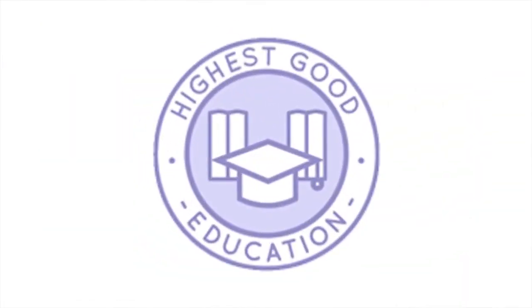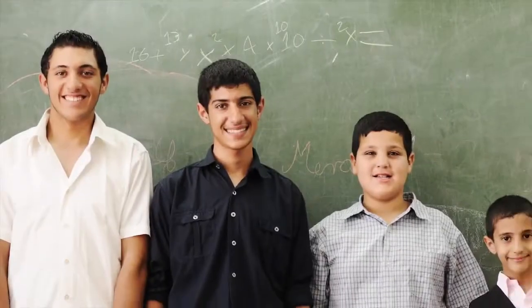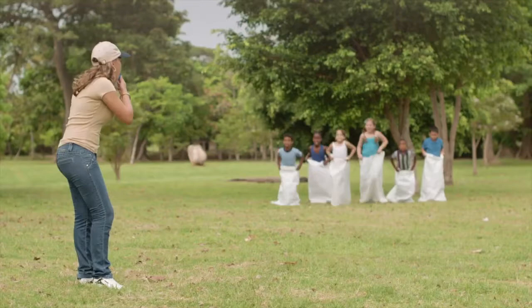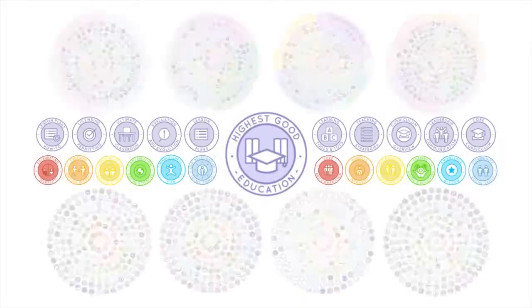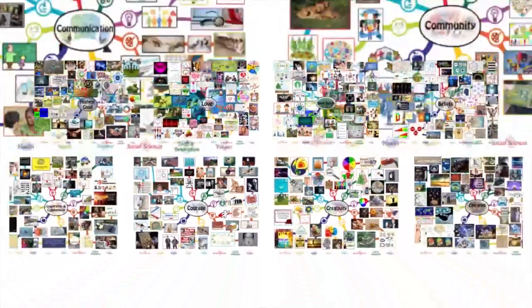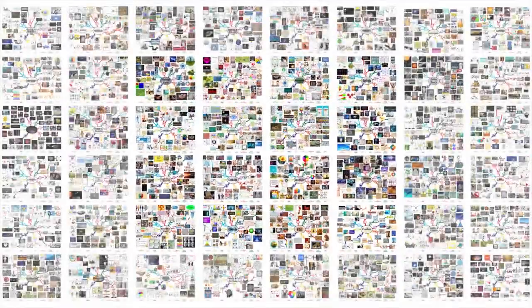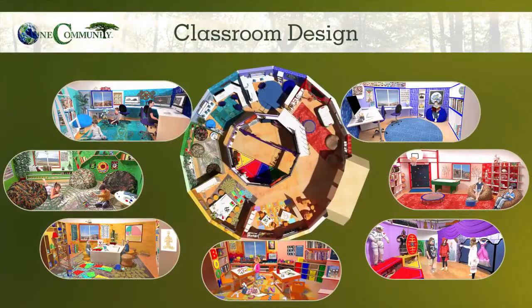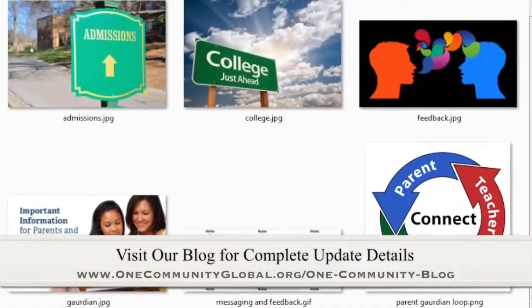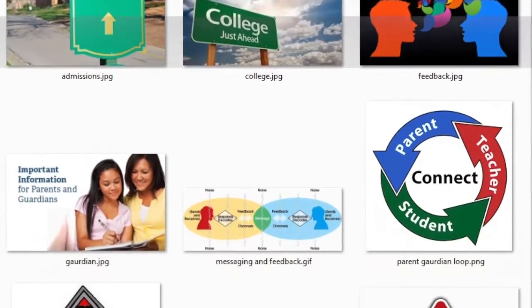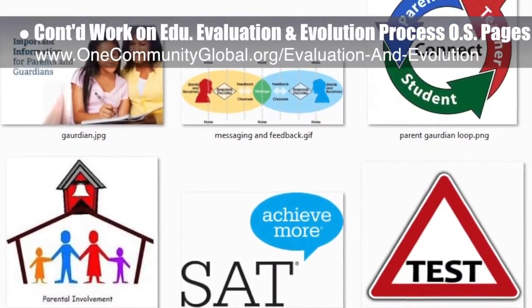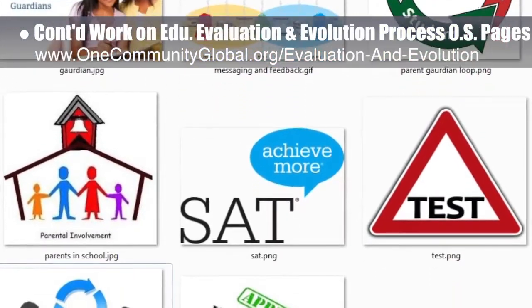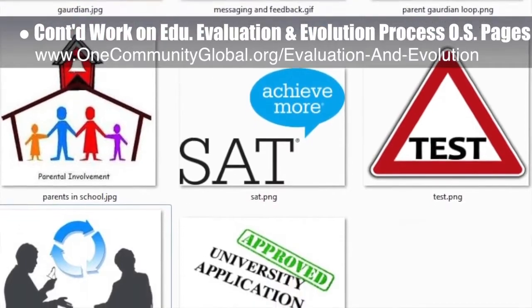One Community's approach to highest good education is designed for all age groups, adaptable to any schooling environment, inspiring and fun for all participants, and includes national standards, all subjects, lesson plans, teaching strategies, learning strategies and tools, classroom design, and more. This week the core team continued researching images to add to the education evaluation and evolution process open source pages and tutorials — we found 11 more images for the pages, as shown here.